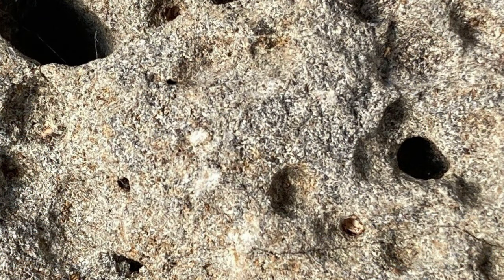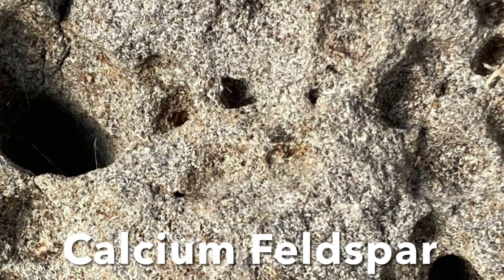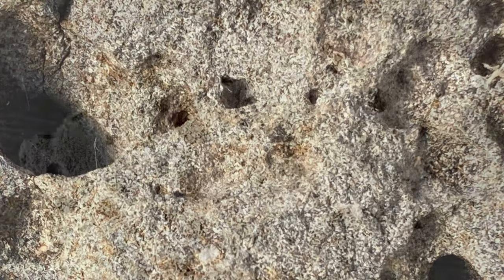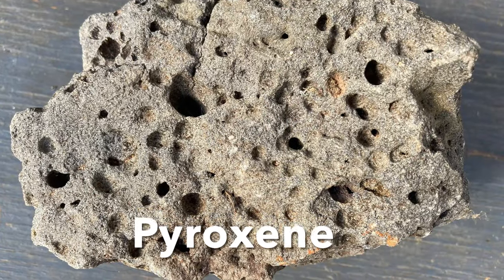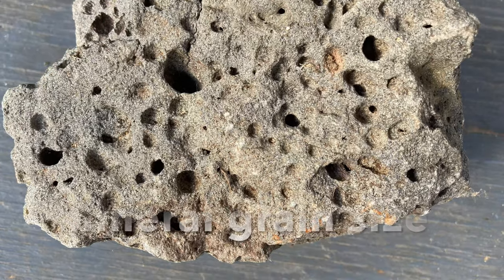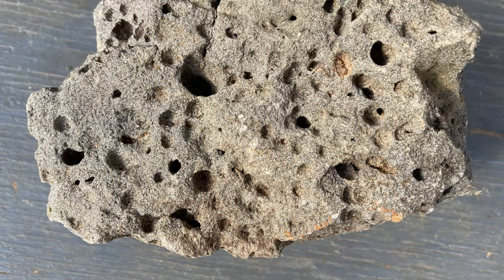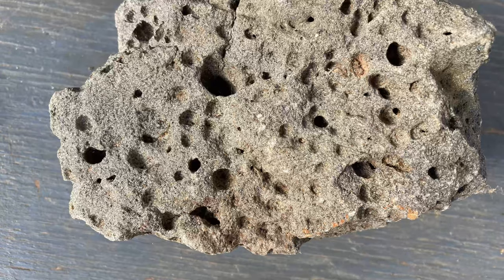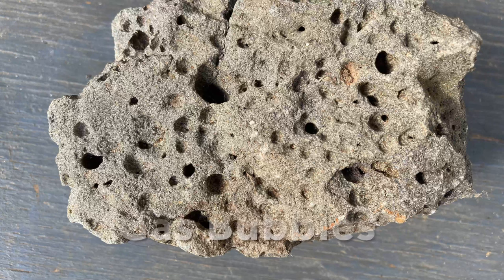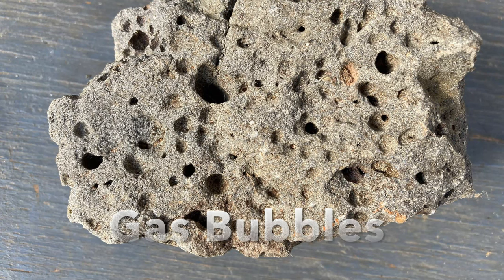The minerals in basalt are exactly the same as the minerals in Diabase. The little tiny white spots are calcium-rich feldspar, and the black stuff is mostly pyroxene, which is high in iron and magnesium. The crystal sizes in basalt are very small because when it comes out of the ground, it cools so quickly the crystals don't have time to grow very big. All the holes were made by gas bubbles that expanded as the hot lava reached the surface of the ground.